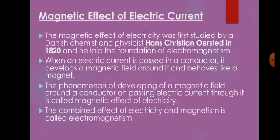Let us start with the magnetic effect of electric current. The electric current has a magnetic effect too. The magnetic effect of electricity was first studied by Danish physicist Hans Christian Oersted in 1820, who laid the foundation of electromagnetism. When an electric current is passed in a conductor, it develops a magnetic field around it and behaves like a magnet. This phenomenon is called the magnetic effect of electricity, and the combined effect of electricity and magnetism is called electromagnetism.